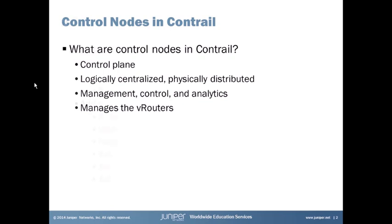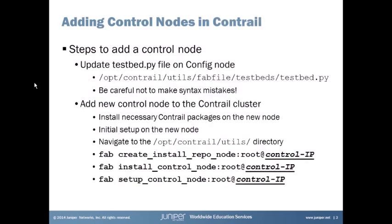Let's talk about adding a control node in Contrail. Why would you want to add one? It's all about redundancy and high availability. If you only have one control node and it goes down or becomes unreachable, you don't want your entire control cluster to fail. So let's talk about adding a second control node.